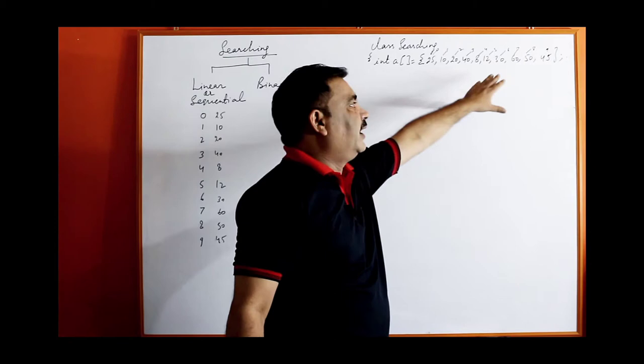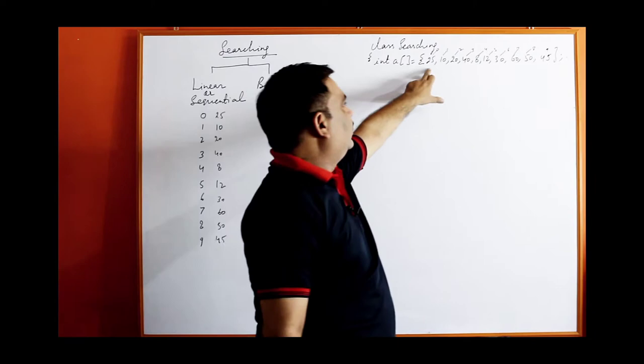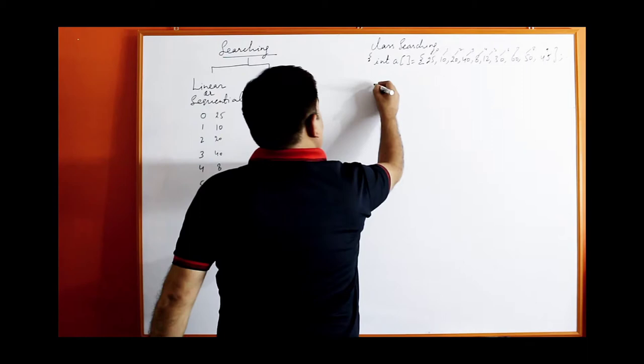Here I have taken some values in the array directly. This is called dynamic or direct initialization of the values — 25, 10, up to 45. The index is from 0 to 9.